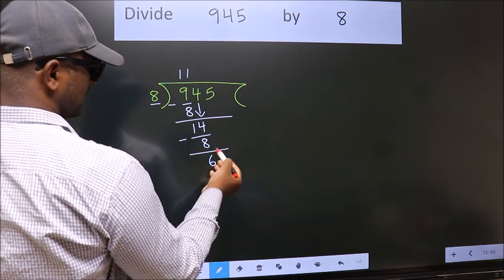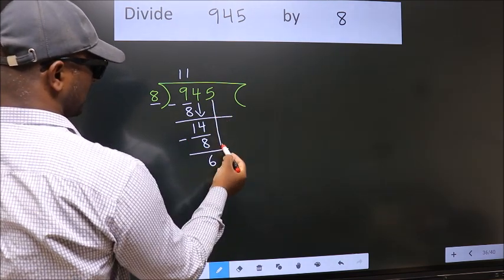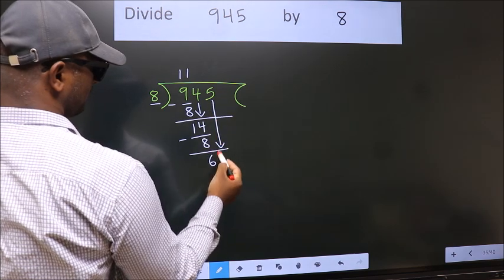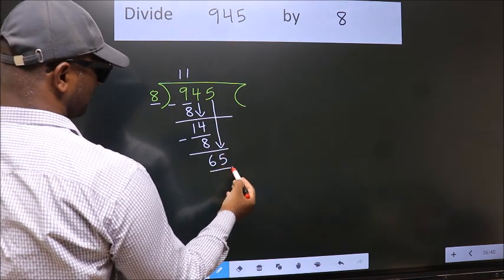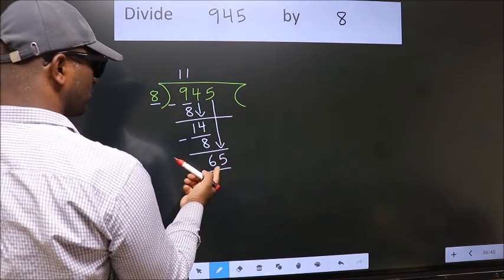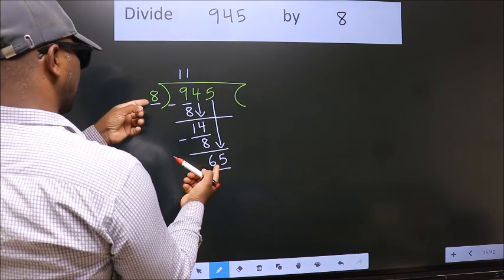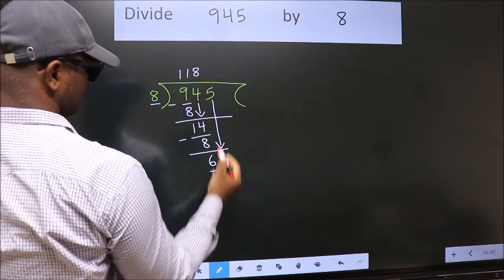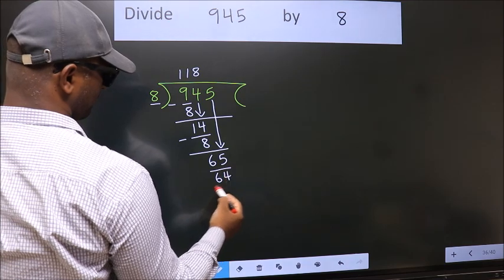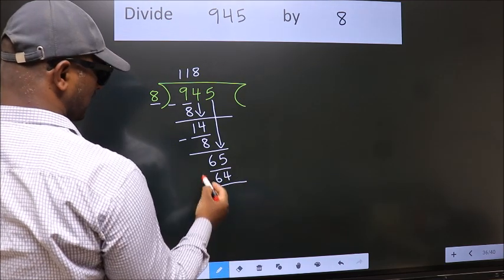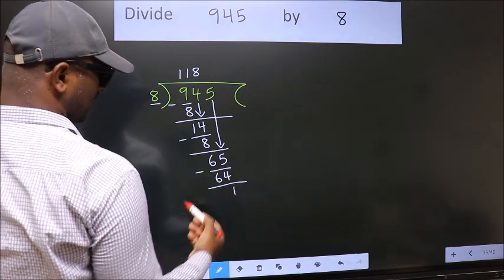After this, bring down the beside number. So, 5 down. So, 65. A number close to 65 in the 8 table is 8 8s 64. Now we subtract. We get 1.